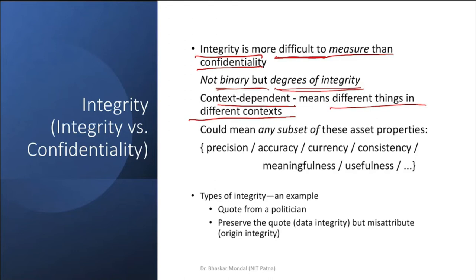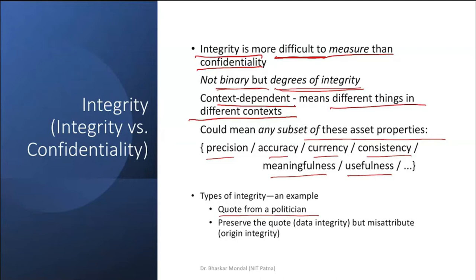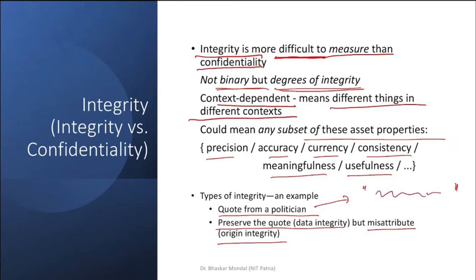Integrity can mean any subset of asset properties like precision, accuracy, currency, consistency, meaningfulness, and usefulness. As a type of integrity example: consider a quote from a politician. Preserving the quote exactly as stated is called data integrity — you have not changed the data or the words.